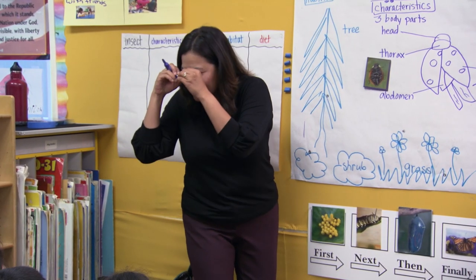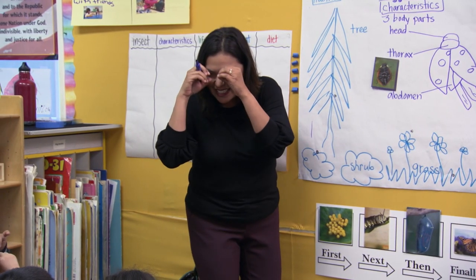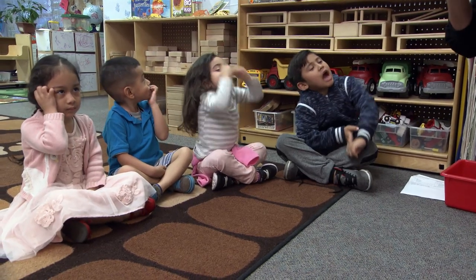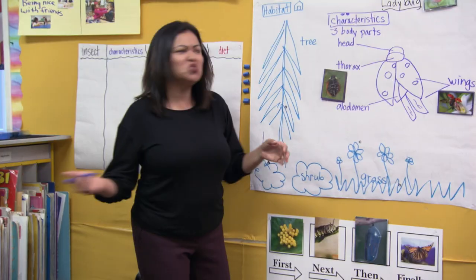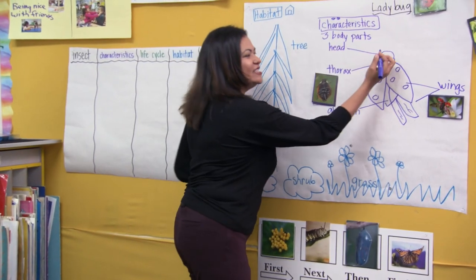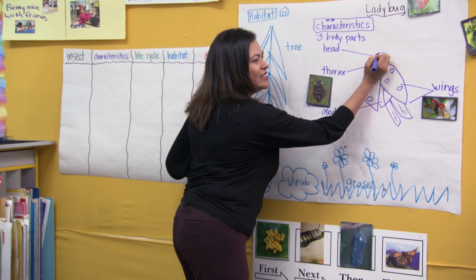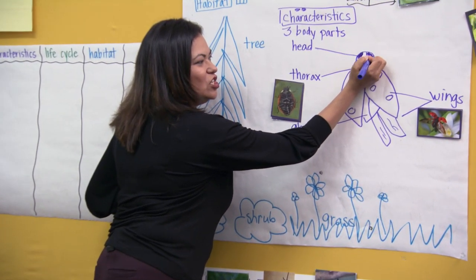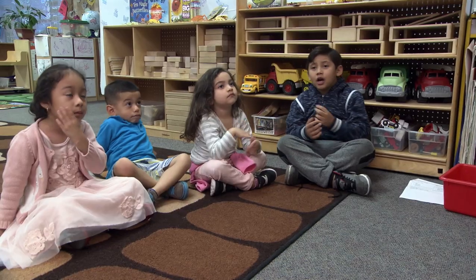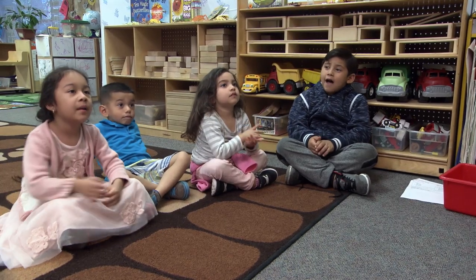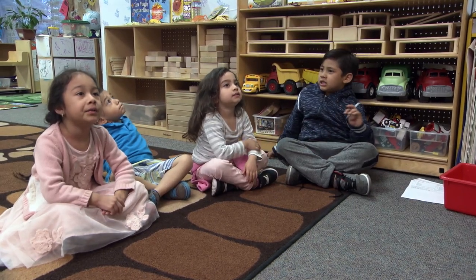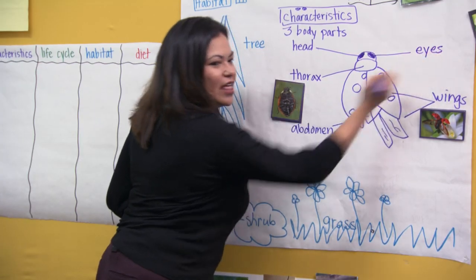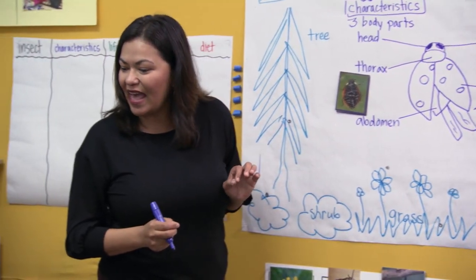Let's talk about some more of its characteristics. What else does it look like? It has a head, thorax, abdomen. It does have eyes. So let me go ahead and sketch these eyes. Say with me: the ladybug has eyes. The ladybug has eyes. So it's drawing first and foremost.